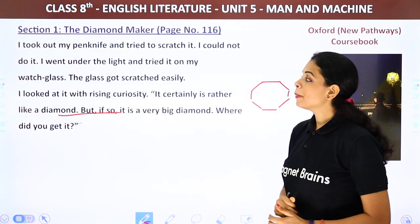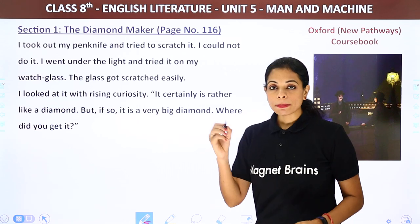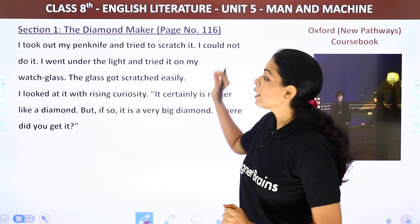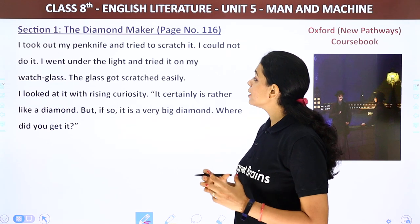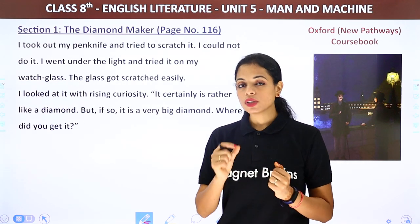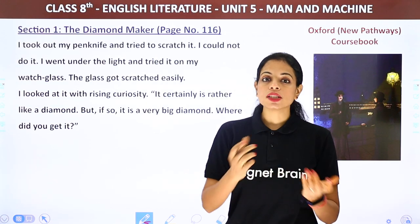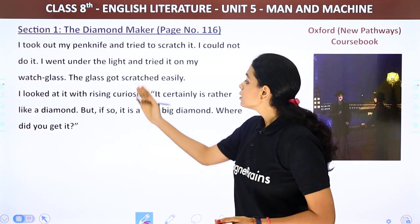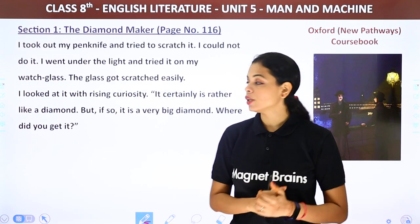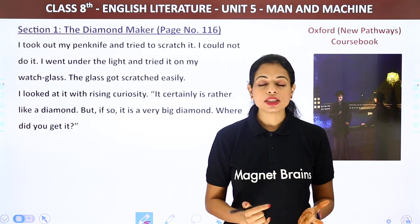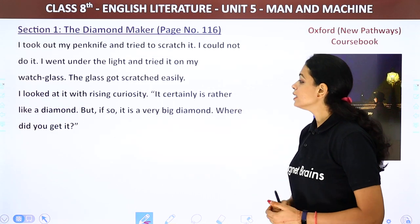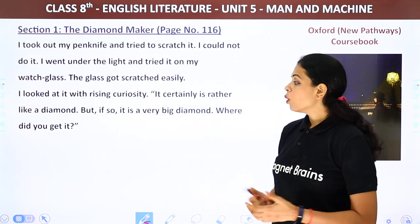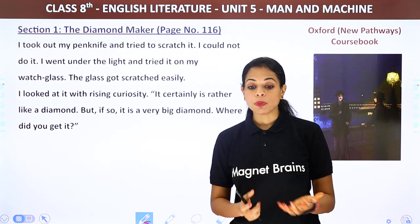The narrator took out his penknife and tried to scratch the stone, but could not. He went under the light and tried it on his watch glass — the glass got scratched easily, but the diamond did not. 'It certainly is rather like a diamond. But if so, it is a very big diamond. Where did you get it?' 'I made it. Give it back to me.' The stranger quickly put it back in his jacket.